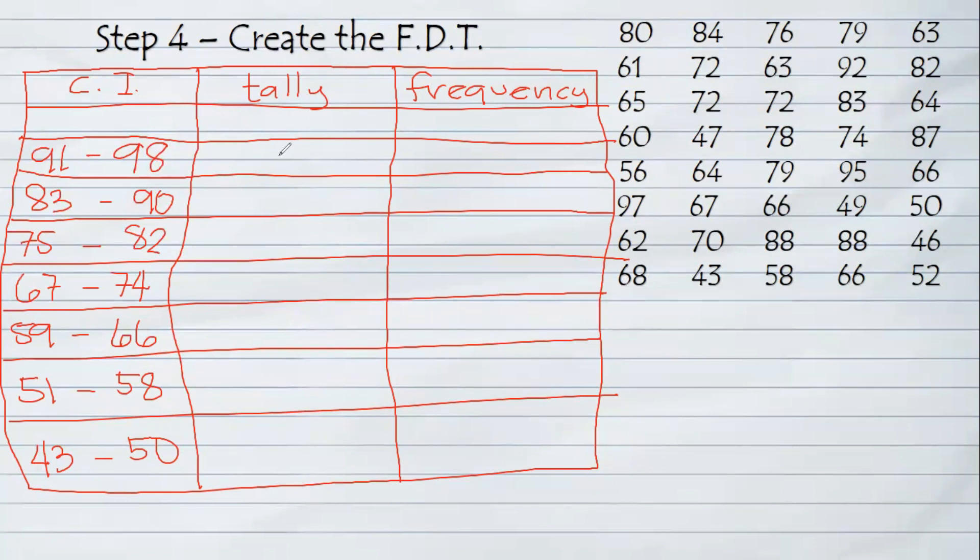Now, please count the class interval. We must have 7: 1, 2, 3, 4, 5, 6, 7. Correction, we exceed the number of rows. We must have only 7, so 7 classes in our table.